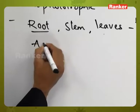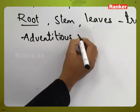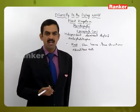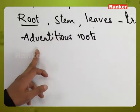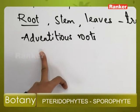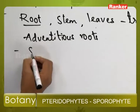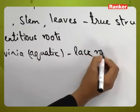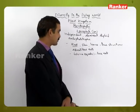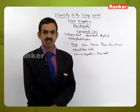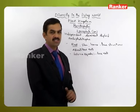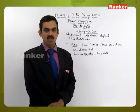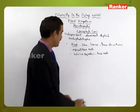Generally, pteridophytes have adventitious roots which perform fixation of the plant into the soil and absorption of water and minerals. These roots have a branched structure. Salvinia is an example which is aquatic and lacks roots. Where roots are absent and the plant is aquatic, it has direct contact with water, so each and every part — particularly the leaves — will absorb water by diffusion. That is the reason why roots are not much important in the life of a Salvinia plant.